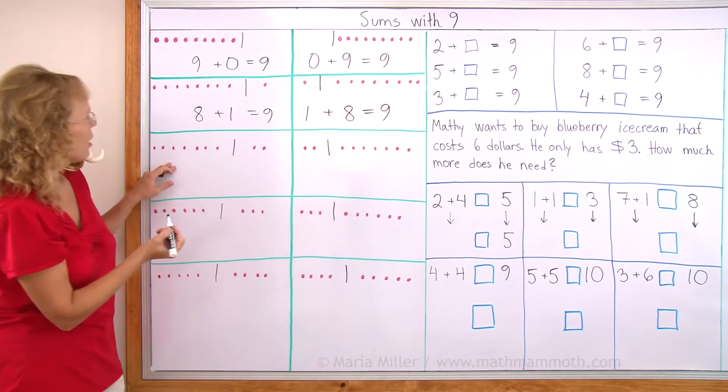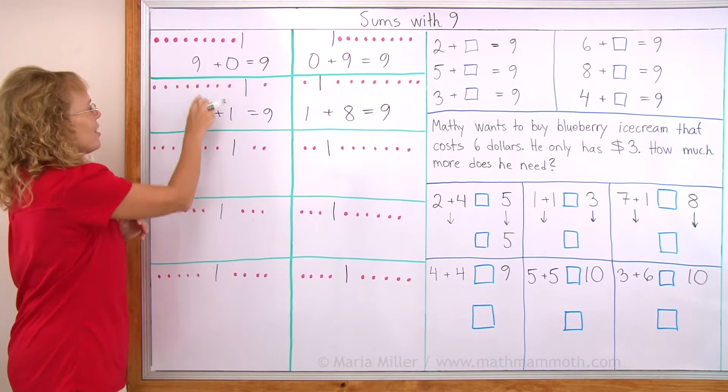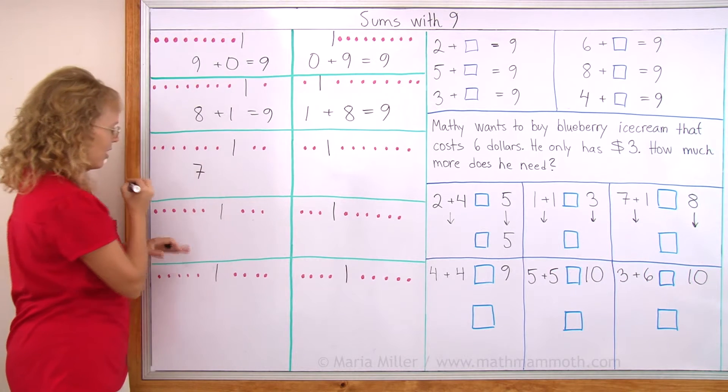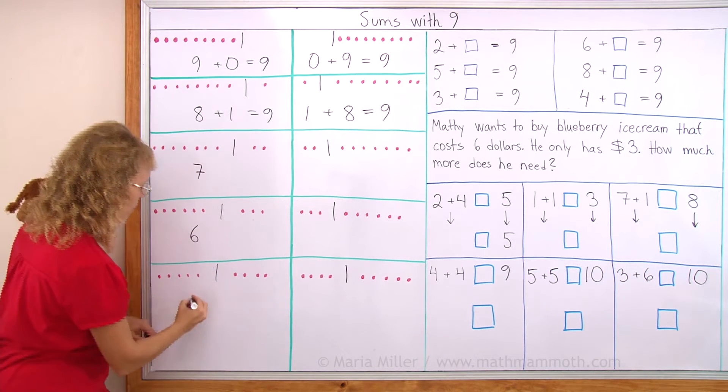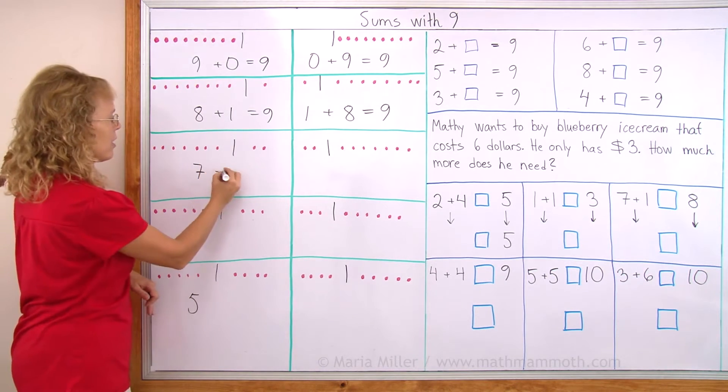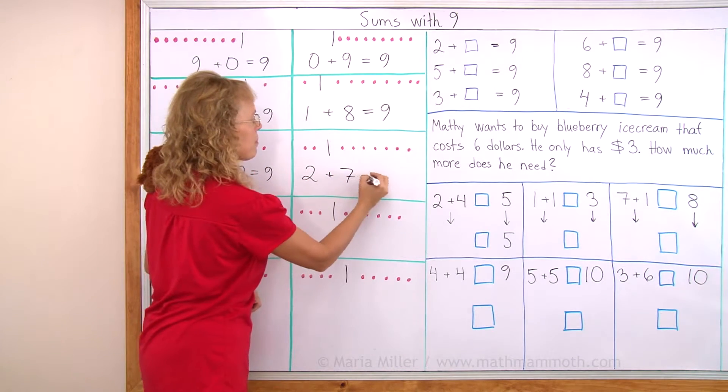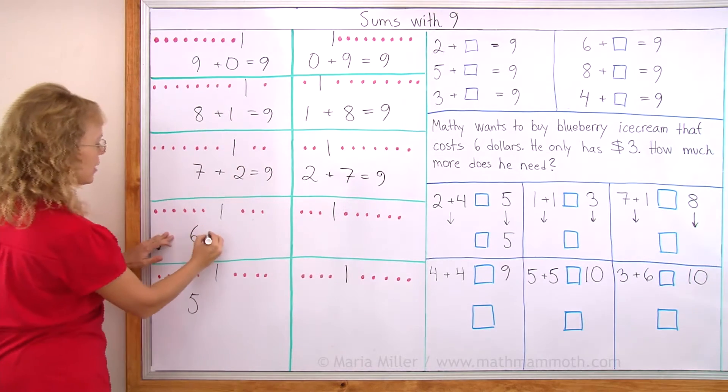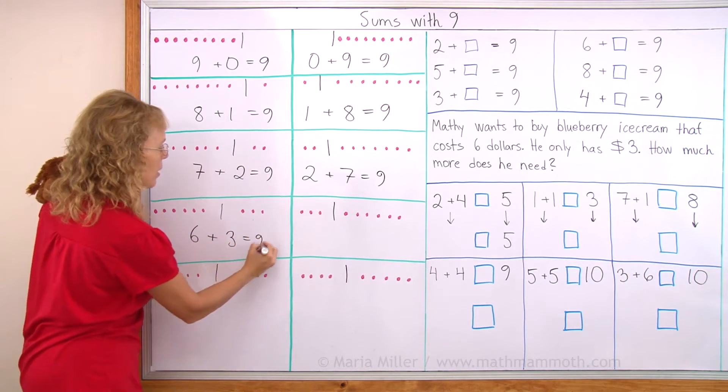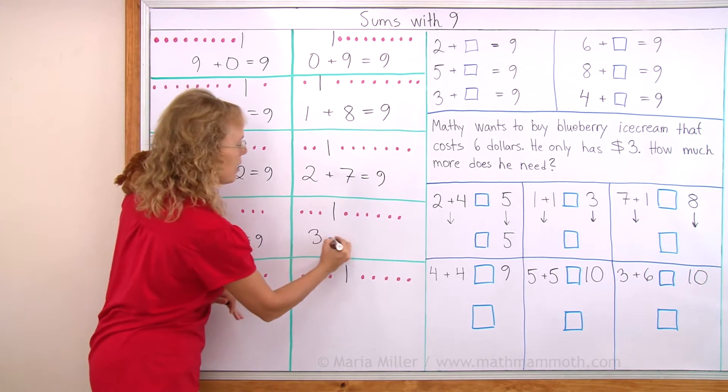And then over here, remember there is a pattern here. 9, 8, 7. And over here will be 6 and over here will be 5. So 7 and 2 makes 9 or 2 and 7.